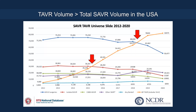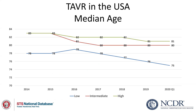In the United States, the TAVR volume has now surpassed the total surgical aortic valve replacement volume since 2019, and the TAVR volume continues to grow as of 2020, despite COVID. At the same time, patients are getting younger, with a median age of 75 years old in the low-risk patients.